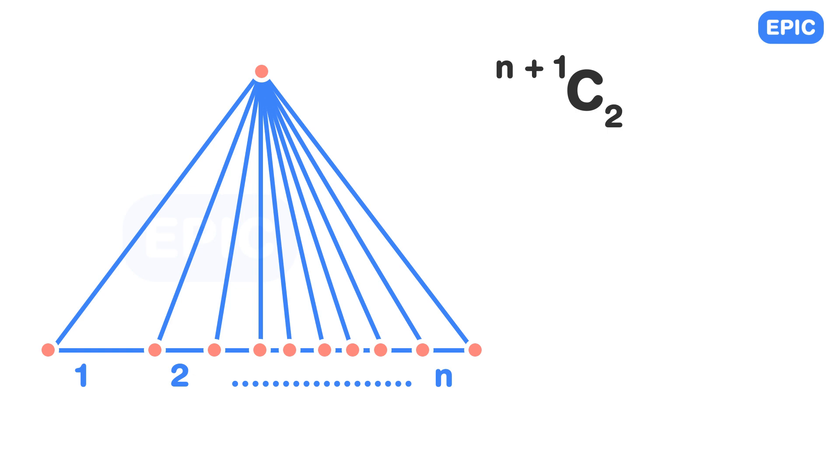The base of the triangle is divided into n parts, so the number of points at the base are n plus 1. Out of these n plus 1 points, we have to choose two points at a time and it will form a triangle along with the top vertex. This is basically n plus 1 choose 2, or n plus 1 C2.